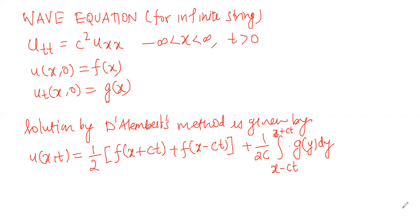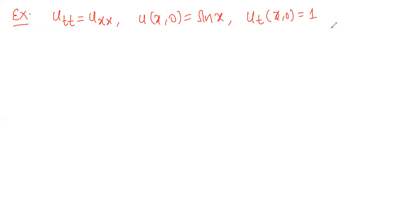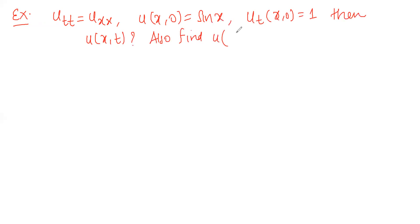Now let me consider a problem so that you understand it better. Consider the example: u_tt = u_xx, with initial conditions u(x, 0) = sin(x) and u_t(x, 0) = 1. Find u(x, t) and also find u(π, π/2).